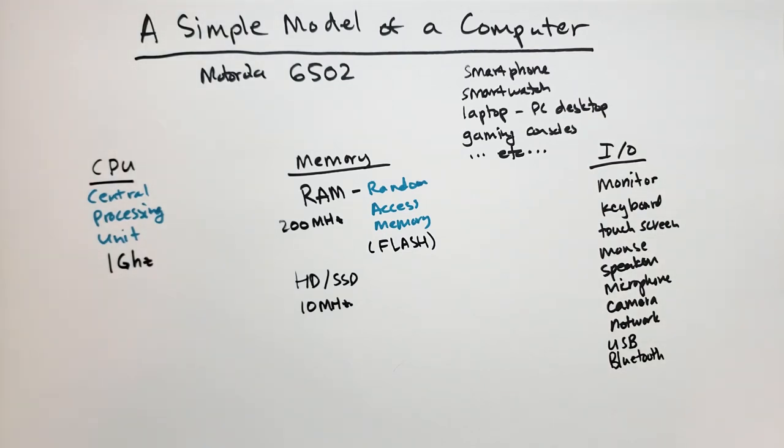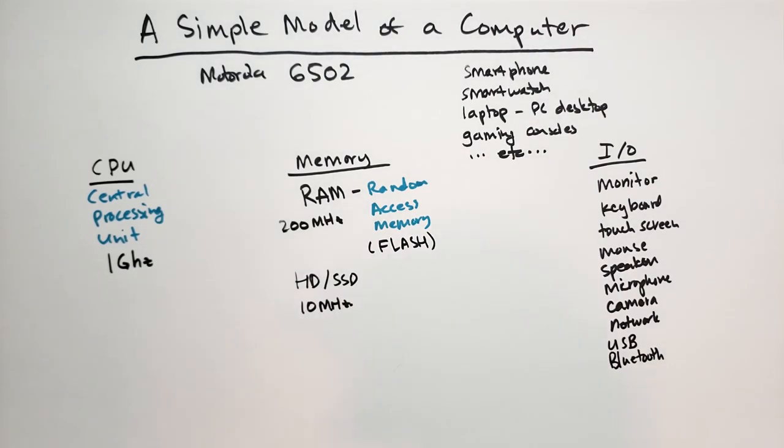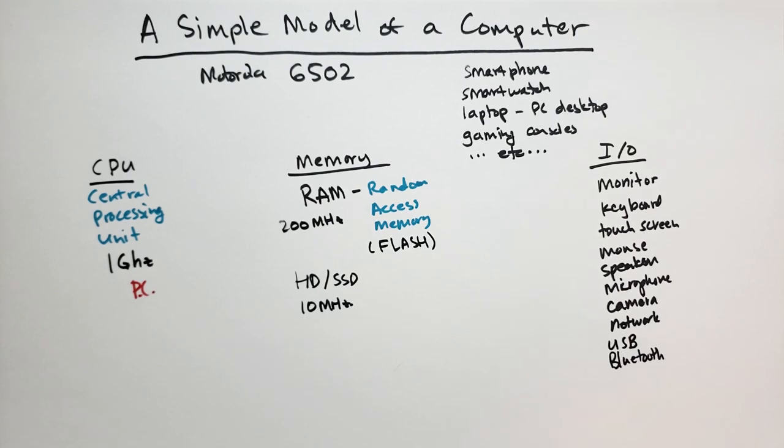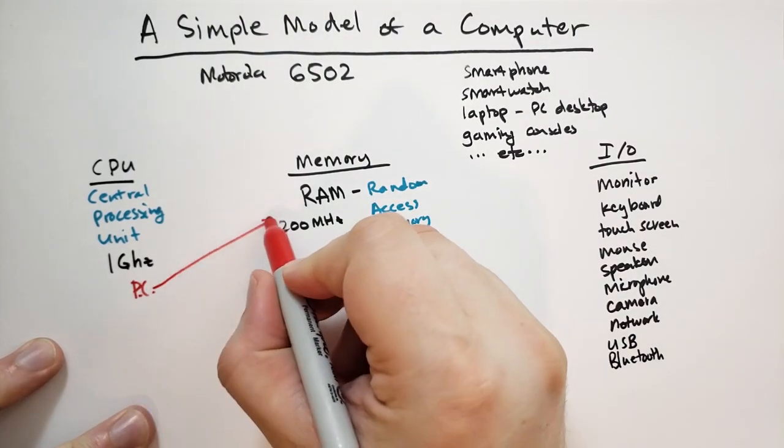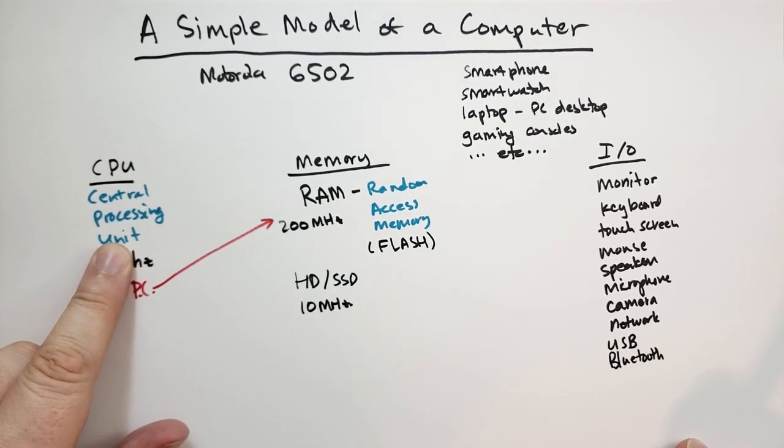Let's talk a little bit more about what the CPU is doing. So the CPU has something called a PC, a program counter. And the PC is basically pointing at a location in memory, and it tells the CPU that that's the next instruction to run.